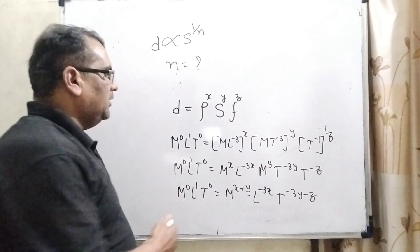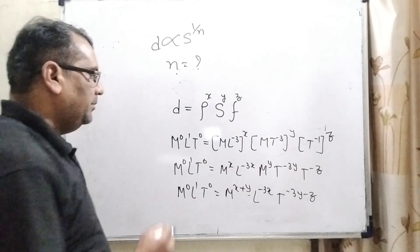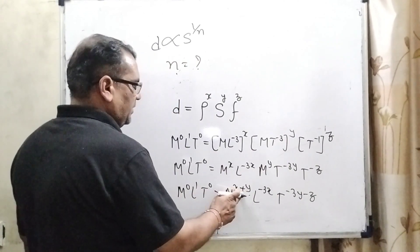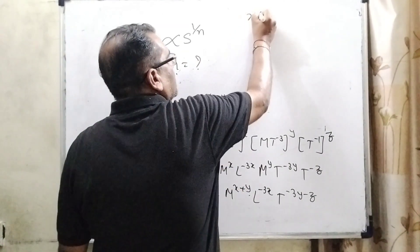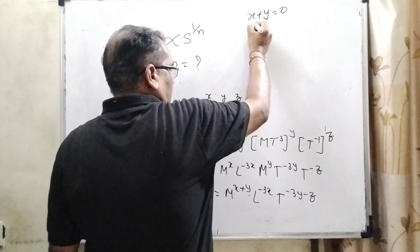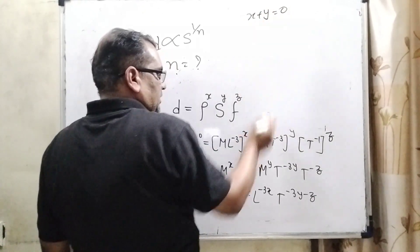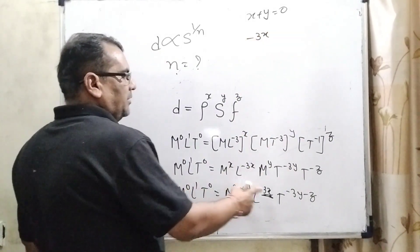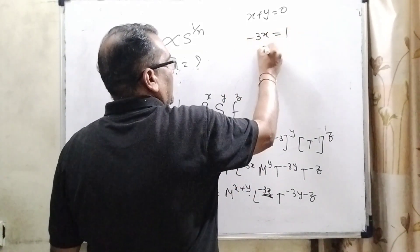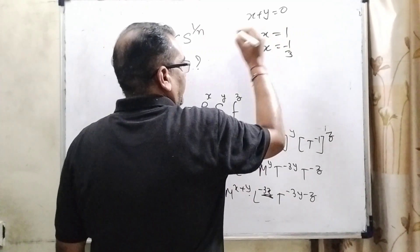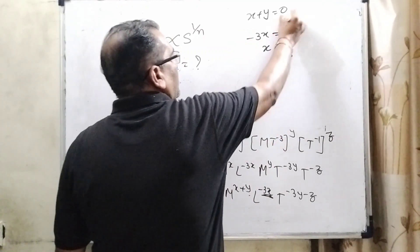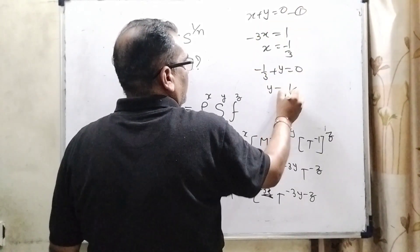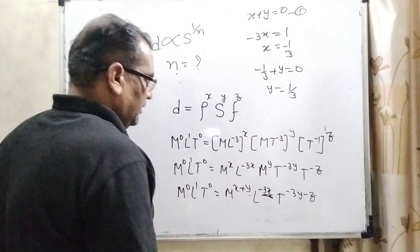Now compare the powers according to the dimension formula, left-hand side and right-hand side. Here we can see that M^(x+y), here M^0, means x + y = 0. And second, L^-3x, here L^1, means -3x = 1, then x = -1/3. Now substitute this value in the first equation, we get y = 1/3.